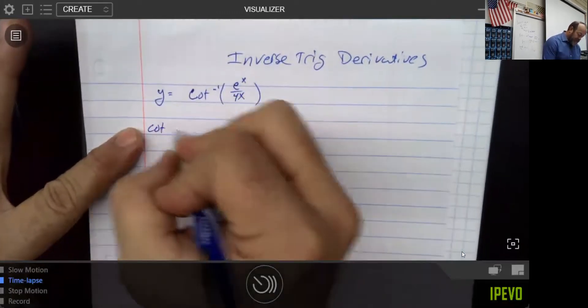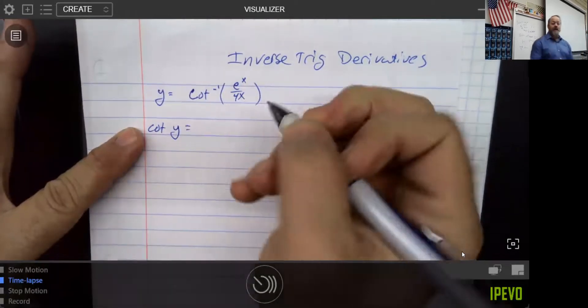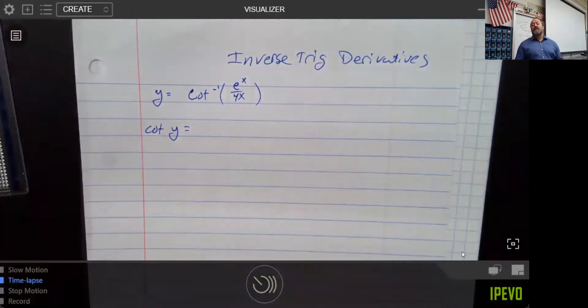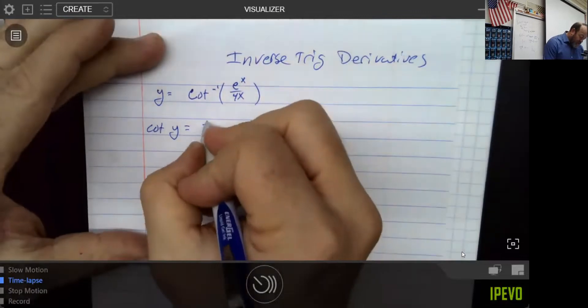So right off the bat, if we have an inverse function, it's very similar to what we did with logarithms. A lot of times you just get rid of the logarithm. If we don't like inverse trig, or you have a problem remembering the inverse trig, just get rid of the inverse trig.